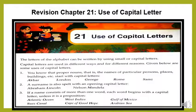Number 1. You know that proper nouns — that is, the name of particular persons, places, buildings, etc. — start with capital letters. All proper nouns start with capital letters. Here you can see the examples: Akbar, London, George, Rome, Sami. These are all proper nouns. So remember that when you write any proper noun, it always starts with a capital letter.